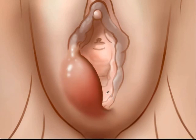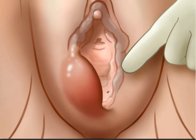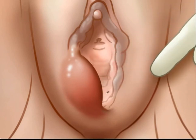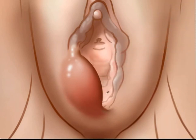Classically, a fluctuant mass is found either on the right or left side of the introitus, external to the hymenal ring, and at the lower aspect of the vulva.